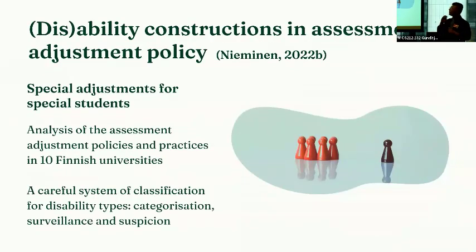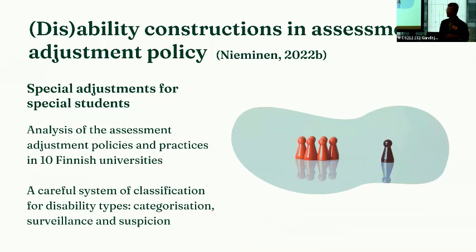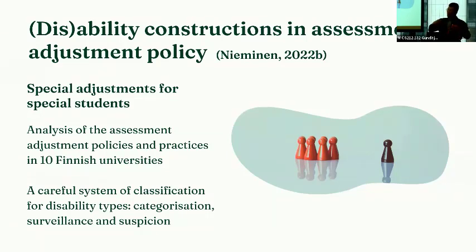Let me start with the first study from my postdoc, which is about disability identity constructions in assessment adjustment policy. This study was conducted in the Finnish context — I analyzed the assessment policies and practices in 10 Finnish-speaking universities. In Finland, as in many other parts of the world including Australia, there is a legal mandate to provide assessment adjustments to students with disabilities — this might mean, for example, extra time in exams or separate testing rooms. In this work, I analyzed how these adjustments — which are absolutely necessary and needed to promote equity — construct students as someone special, as special students who require special adjustments.